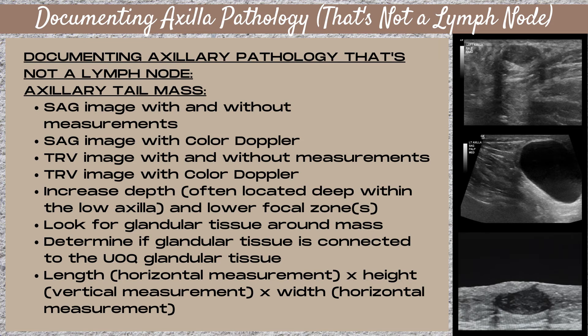Look for glandular tissue around the mass. This will help you determine if it's within accessory breast tissue or within the axillary tail tissue. If you locate glandular tissue, look to see if it is connected to the skin line — that would be accessory breast tissue — or if it is connected to the upper outer quadrant glandular tissue, which would make it axillary tail tissue. It's not important which plane you take your measurements in, as long as you have a length (horizontal measurement), a height (vertical measurement), and a width (horizontal measurement).